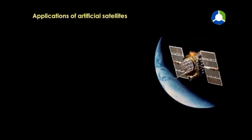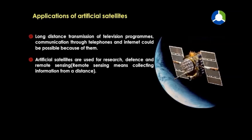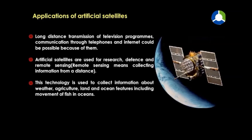Applications of artificial satellites include long distance transmission of television programs; communication through television and internet could be possible because of them. Artificial satellites are used for research, defense, and remote sensing. Remote sensing means collecting information from a distance. This technology is used to collect information about weather, agriculture, land and ocean features, including movement of fish in oceans.